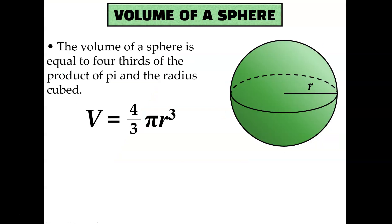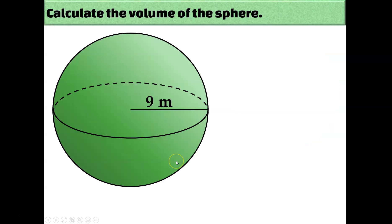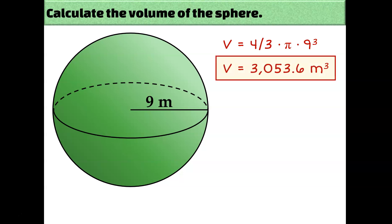Finally, let's discuss the volume of a sphere. The formula is four-thirds times pi times r cubed. And if I had a dollar for every time a student did r squared instead of r cubed, I could retire. Please be sure that you are cubing your radius when calculating the volume of a sphere. The volume of this sphere would be four-thirds times pi times 9 cubed — 9 to the third power — and we get an answer of 3,053.6 cubic meters.